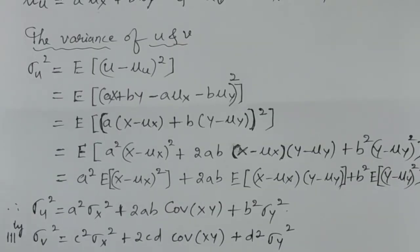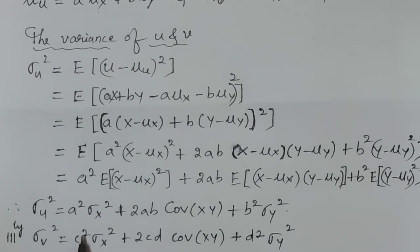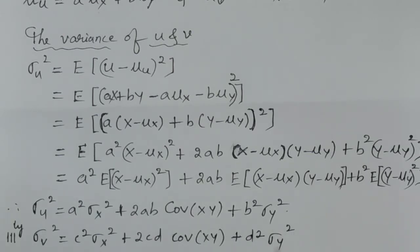Similarly, if v is equal to cx plus dy, the variance of v is: sigma_v² = c²·sigma_x² + 2cd·Cov(x,y) + d²·sigma_y².